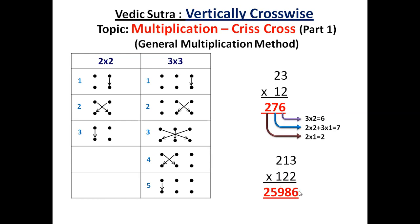So direct one line answer you get by using this criss cross method of multiplication. So this is 2 digit by 2 digit. These are steps for 3 digit by 3 digit.